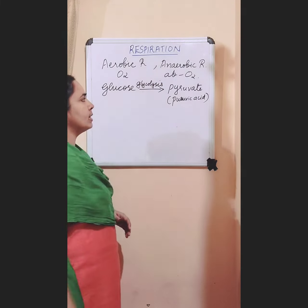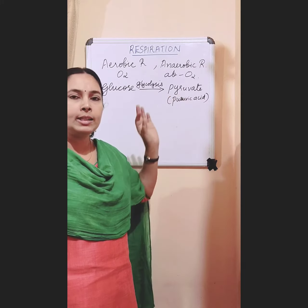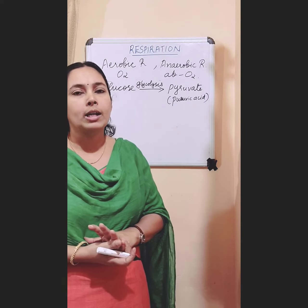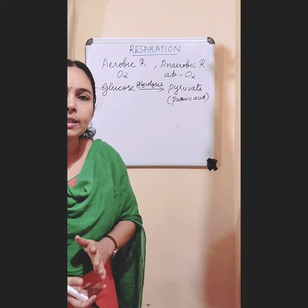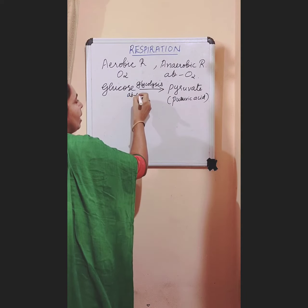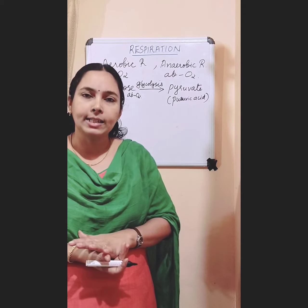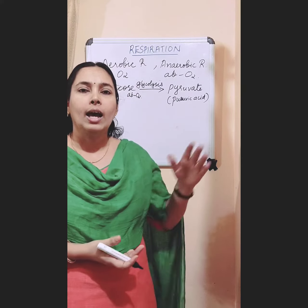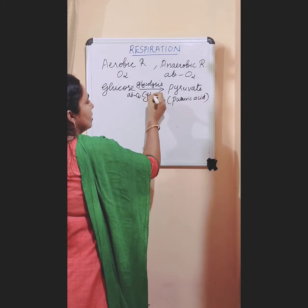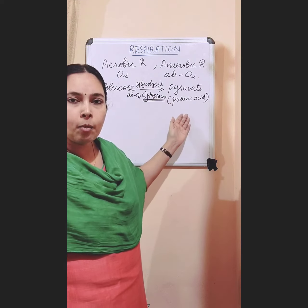So what is glycolysis? It is the process of breaking down of glucose to pyruvate. This is the first step in respiration, common to both aerobic and anaerobic respiration. This first step takes place in the absence of oxygen, and it takes place in the cytoplasm of the cell.